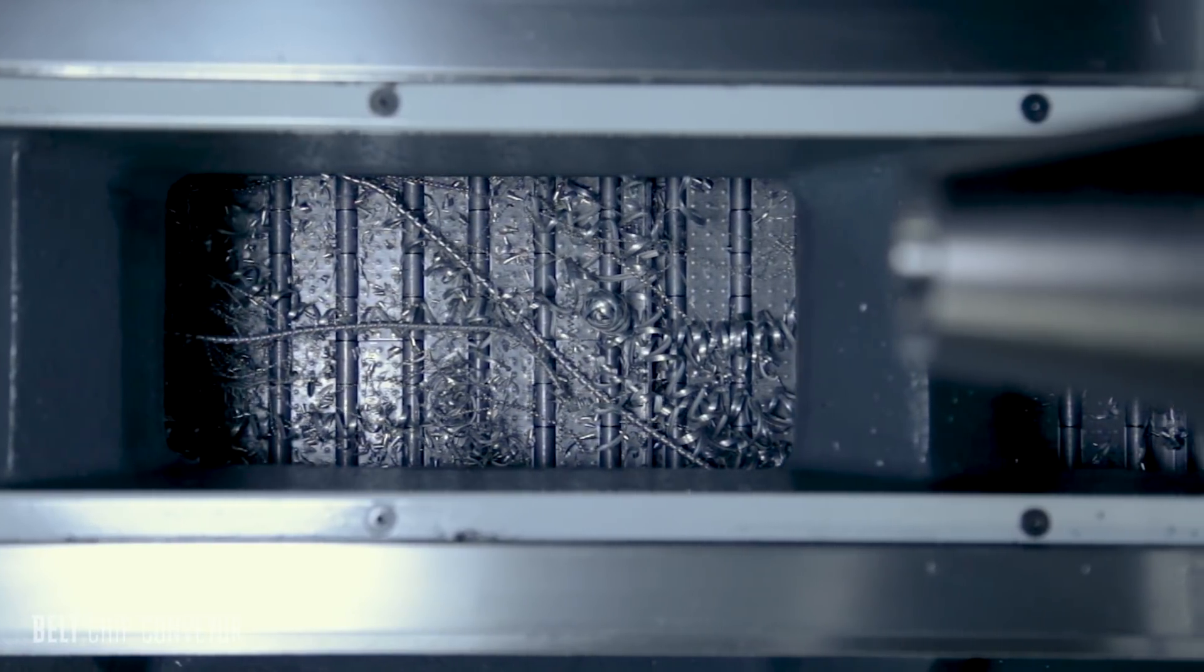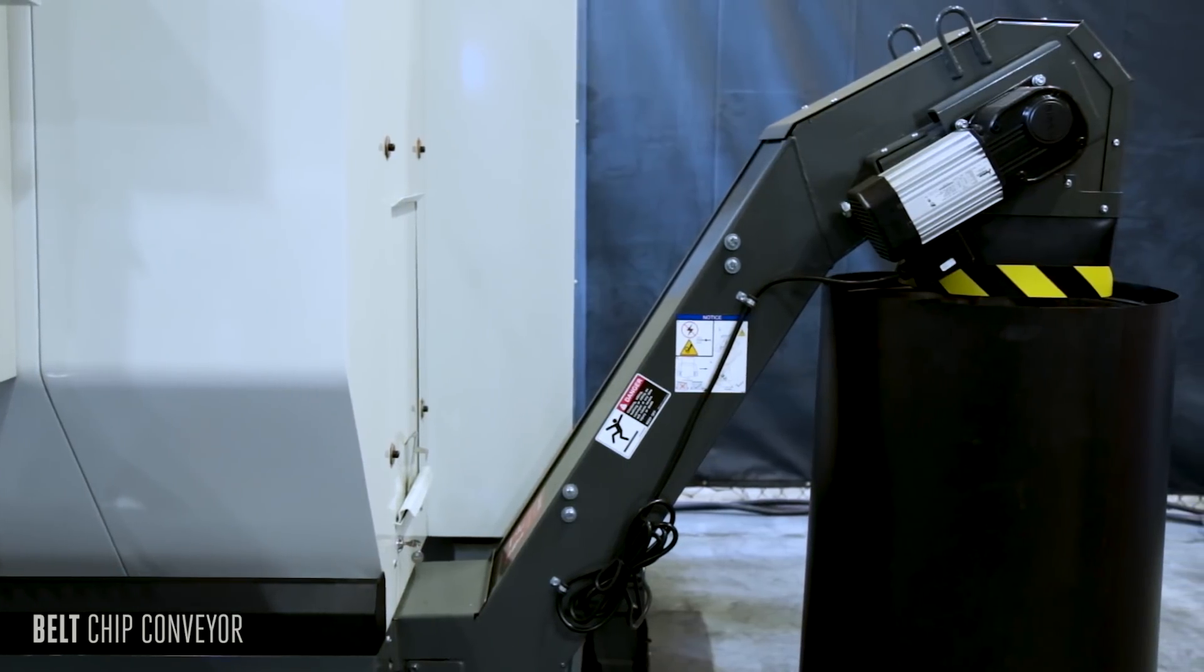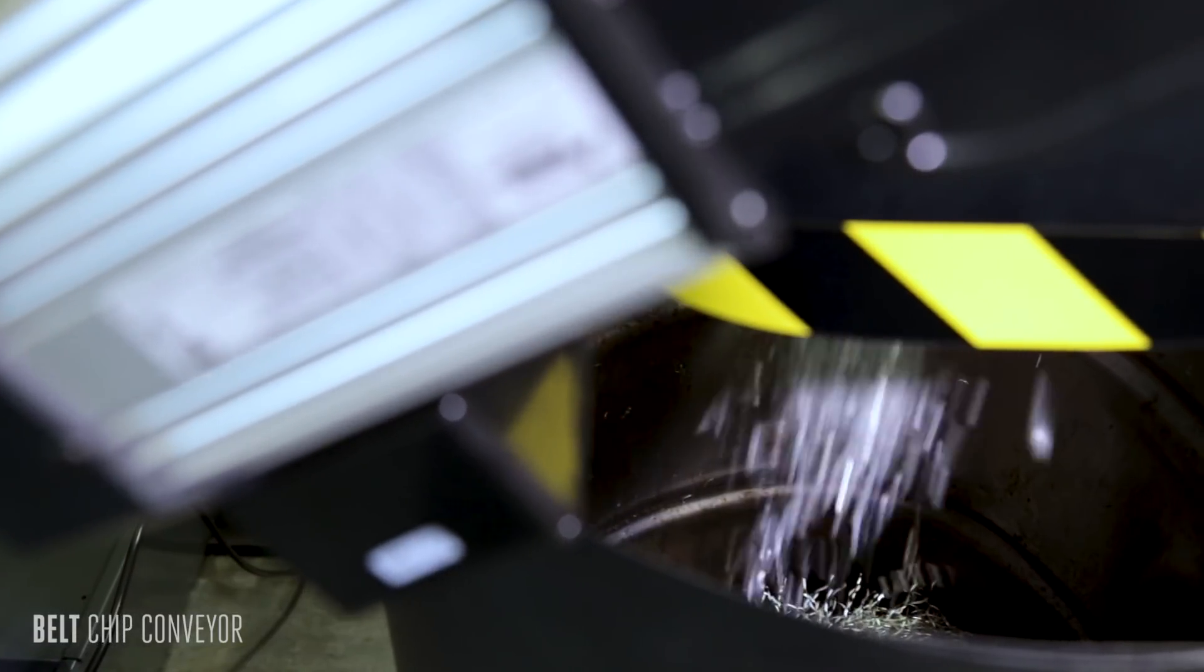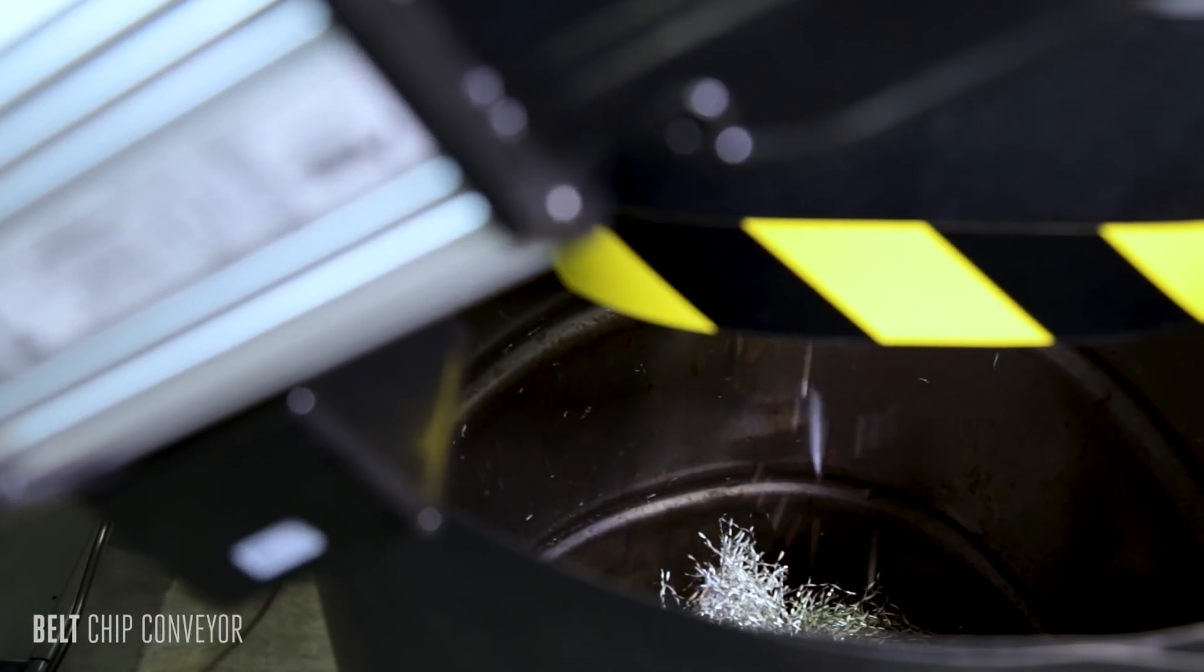Durable steel construction means that these heavy-duty conveyors are built to last. The linked belt pulls chips from the bottom of your machine and pushes them out at the height of a standard 55-gallon drum-sized container.